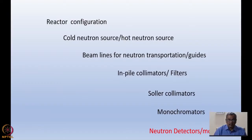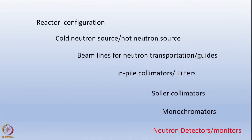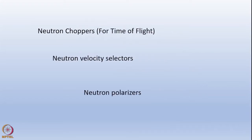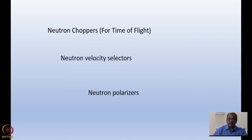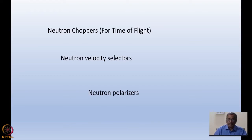So far I have gone from reactor configurations - how a reactor core is placed and cold and hot neutron sources - all the way to neutron detectors and monitor counters. Now I want to introduce you to a few more devices: neutron choppers, neutron velocity selectors, and neutron polarizers.